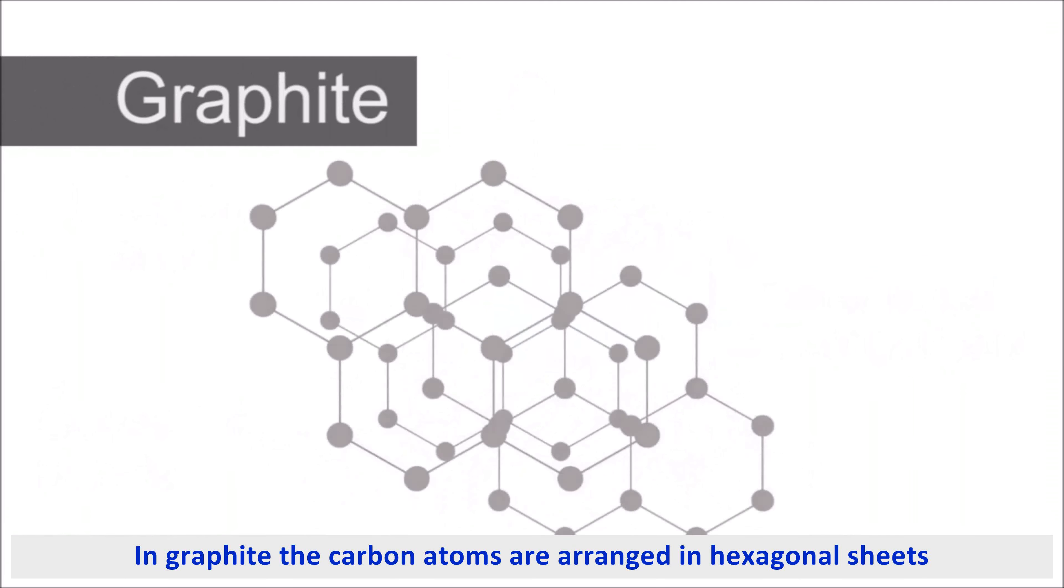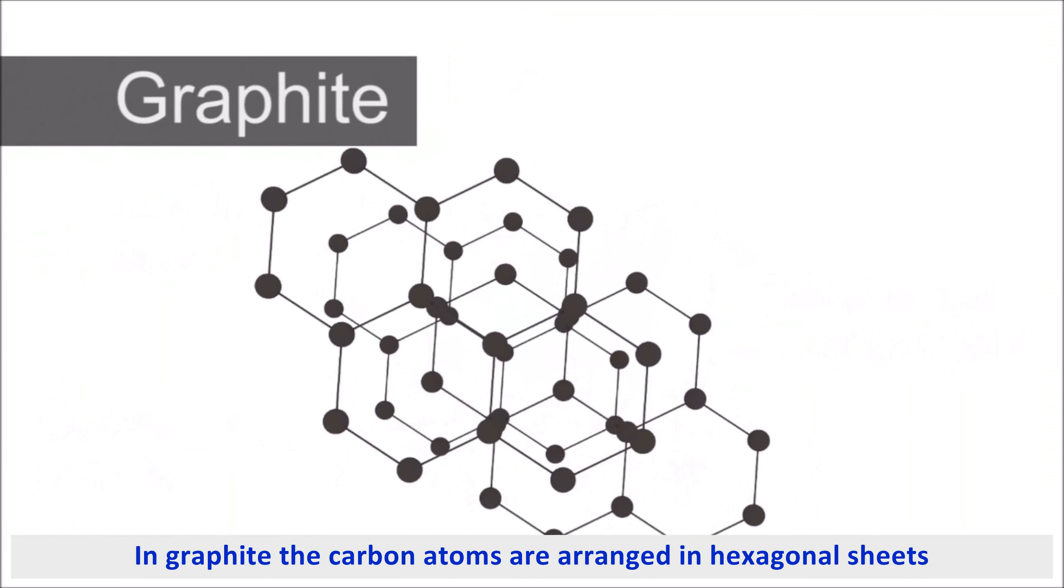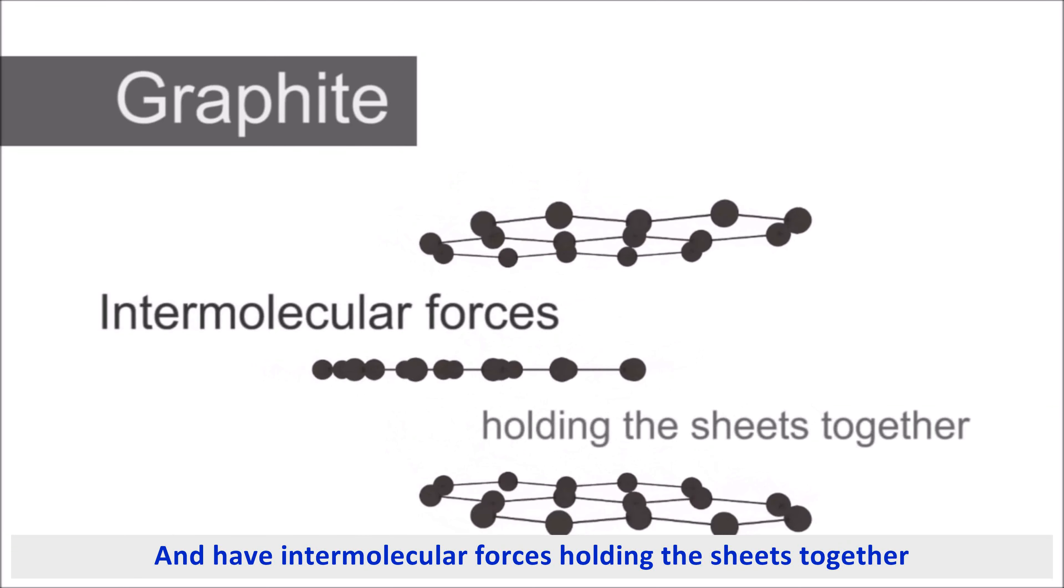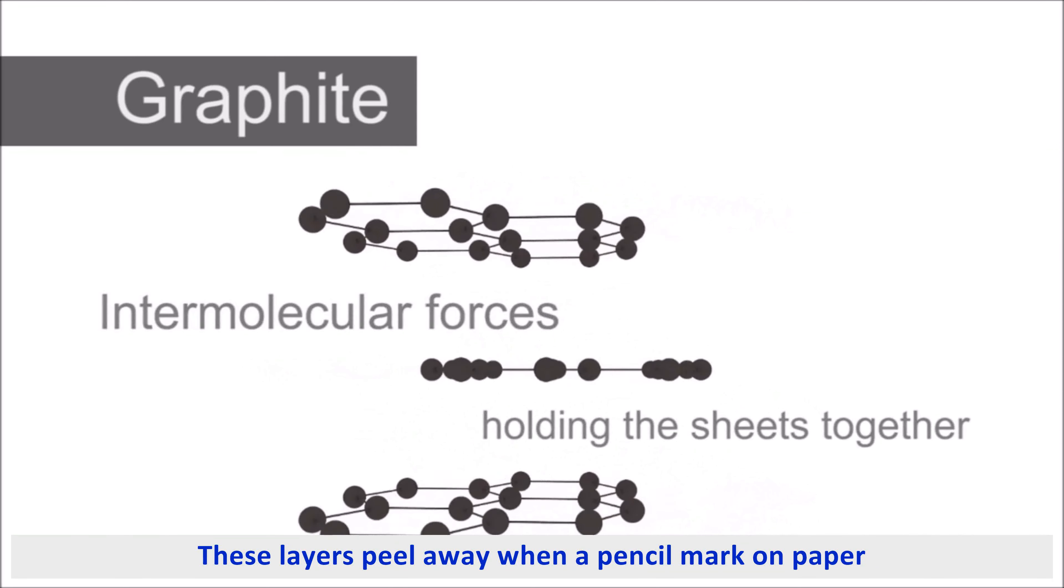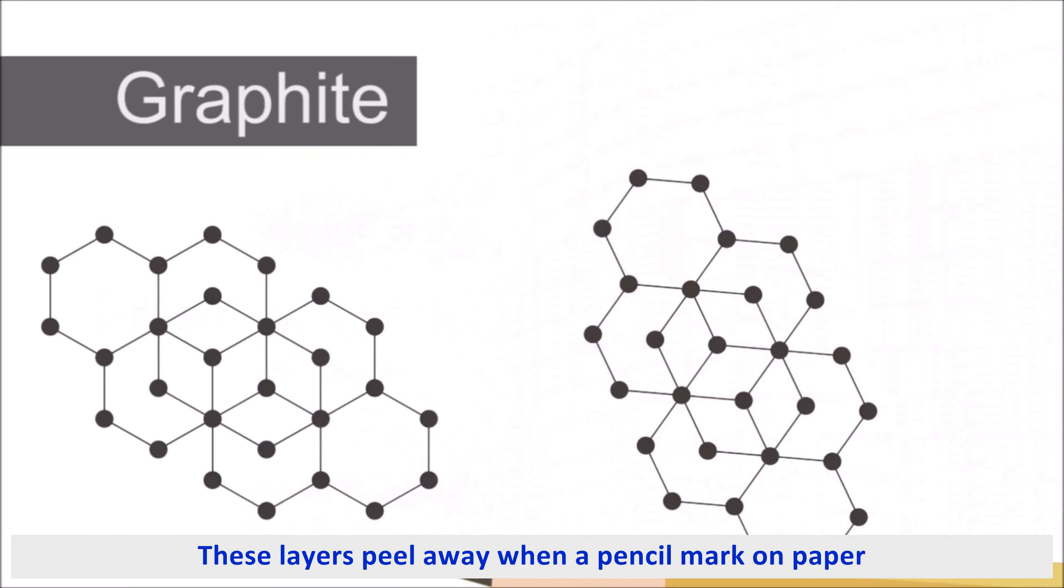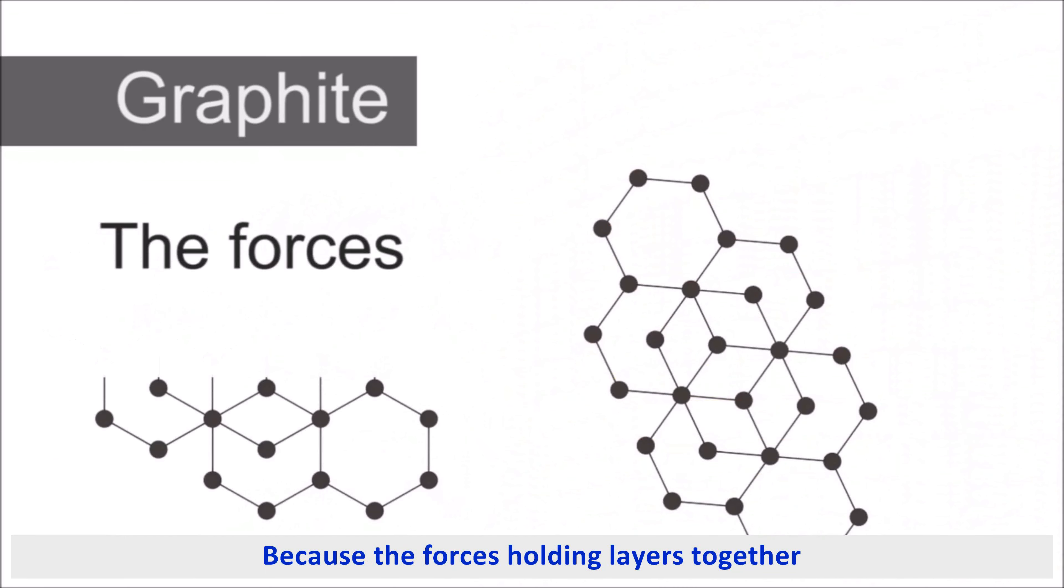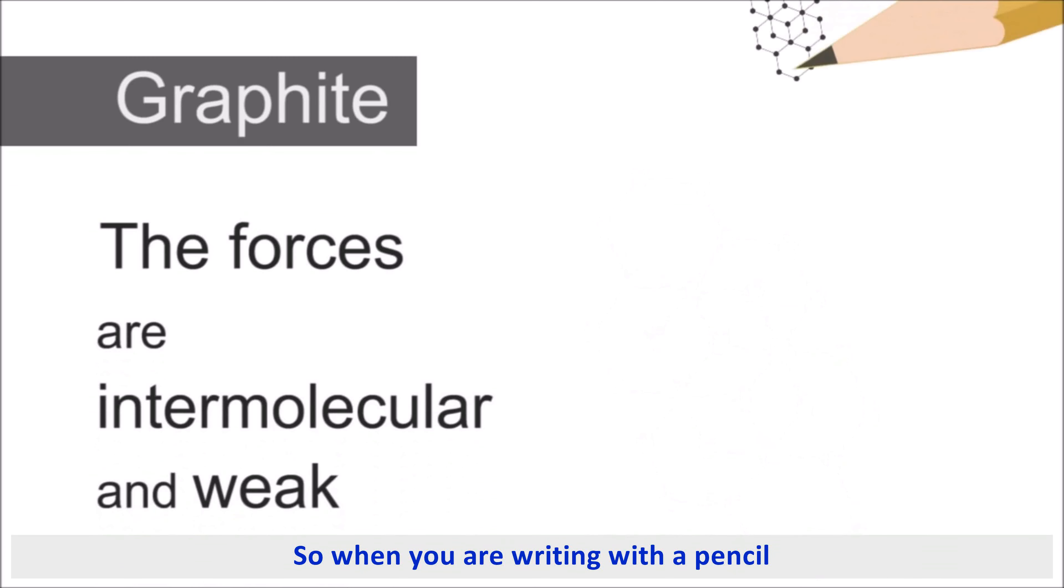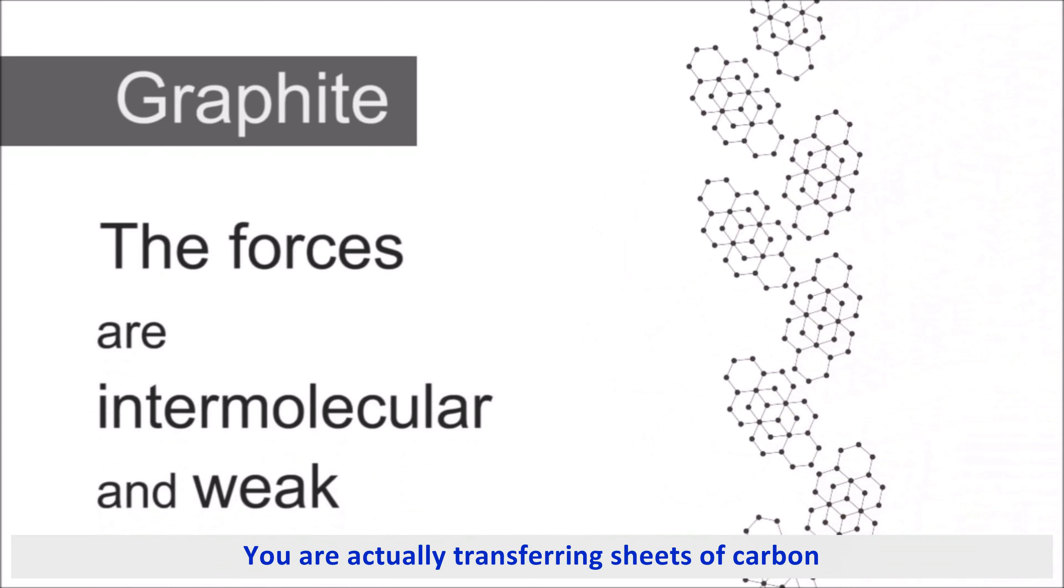In graphite, the carbon atoms are arranged in hexagonal sheets and have intermolecular forces holding these sheets together. These layers peel away when our pencils make a mark on paper, because the forces holding the layers together are intermolecular and are quite weak. So when you are writing with a pencil, you are actually transferring sheets of carbon.